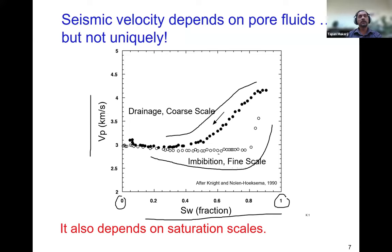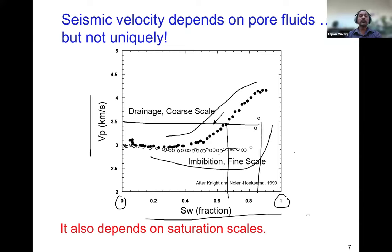If we observe a particular velocity — or impedance, which is velocity times density — and want to interpret it in terms of saturation, the answer is non-unique. For coarse-scale patchy saturation it might be 65% water saturation, while for fine-scale saturation it might be 85%. We need to know when to model using coarse-scale patchy saturation versus fine-scale saturation, which depends on the reservoir processes — imbibition or drainage — and the different pore fluids present. That helps reduce the ambiguity of interpretation.